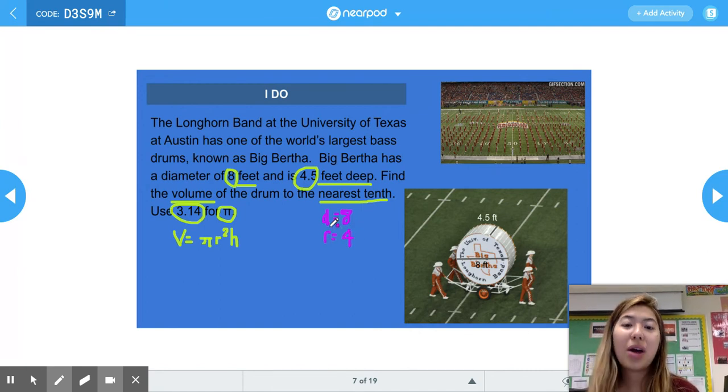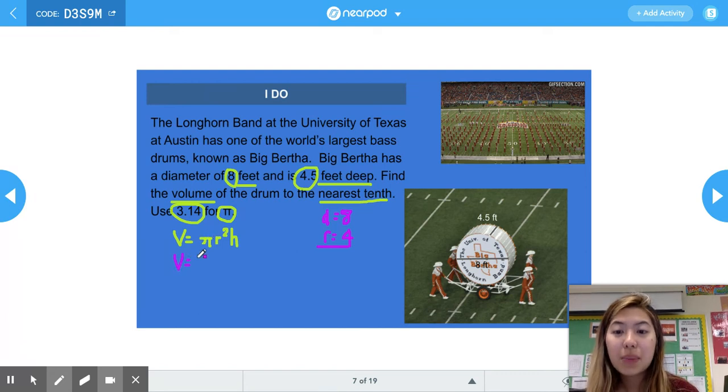Now that we have what our radius is, we can plug it into our volume of cylinders equation. V = 3.14 times the radius, which is 4, squared times the height, which in this case is 4.5.